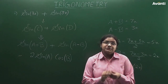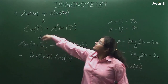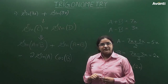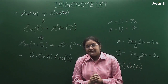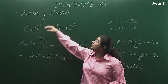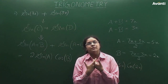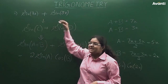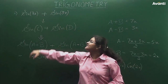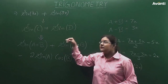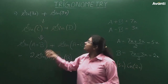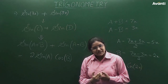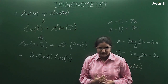Hello everyone. In this question, we have the expression sine of 7x plus sine of 3x and we want to convert it into a product of two trigonometric functions. This is an expression of the form sine of c plus sine of d, where c is 7x and d is 3x. We need to convert it into the product of two functions.